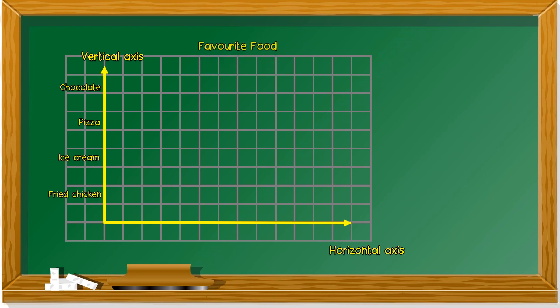We look at this next bar chart. Remember this line. What is it called? It's called vertical axis. How about this line? Horizontal axis. So we are going to take a look at favorite food. We ask some pupils about their favorite food.